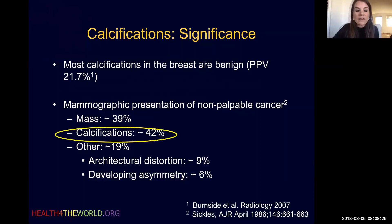Calcifications are going to be the most common mammographic presentation of non-palpable cancers, followed by masses and then distortions and developing asymmetries. So we really want to be able to identify calcifications that require biopsy because it is an early detection of breast cancer very frequently.